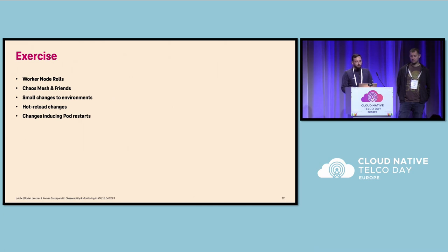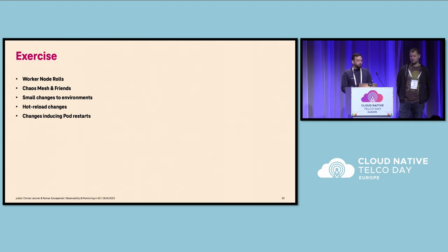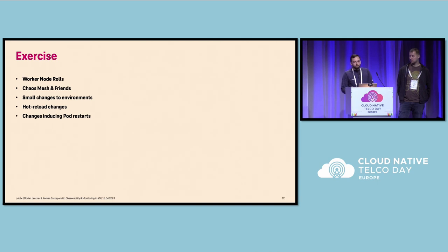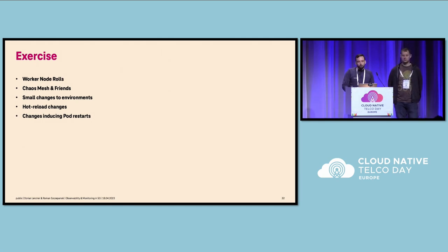You have to exercise: do worker node rolls, replacing old machines with new ones at a higher kernel patch level. Use tools like Chaos Mesh to do chaos testing — kill some parts, see if the application is as resilient as you hope. Do a lot of small changes to environments and get to know: is this change hot-reloadable, can I run it without any application restart? Or does it include pod restarts, and if pods restart, what does it mean for the customer? As an example, we ran node rolls completely replacing the entire hardware for five days in a row — we got all the data on what can go wrong, and also to train machine learning, so it knows a node roll is an expected event.